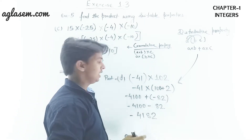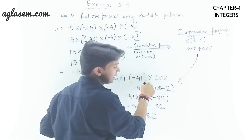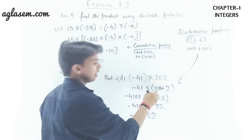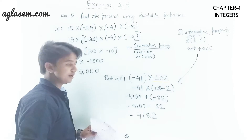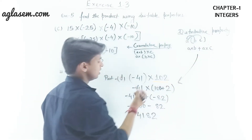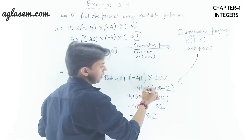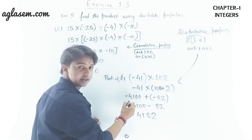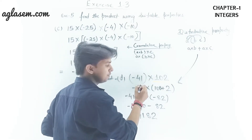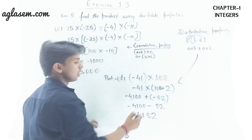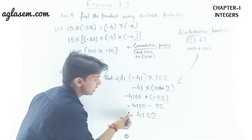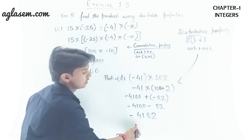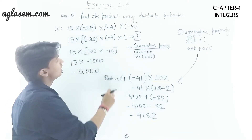Part d: (−41) × 102. We split 102 as 100 + 2 and apply the distributive property: (−41) × 100 + (−41) × 2. That gives −4100 + (−82). Solving: −4100 − 82 = −4,182. This is the product for Part d.